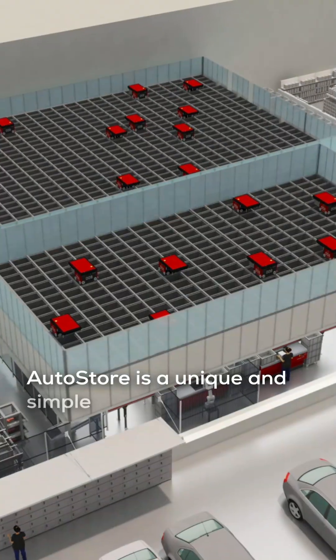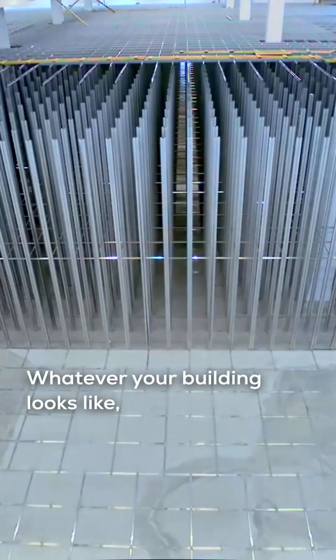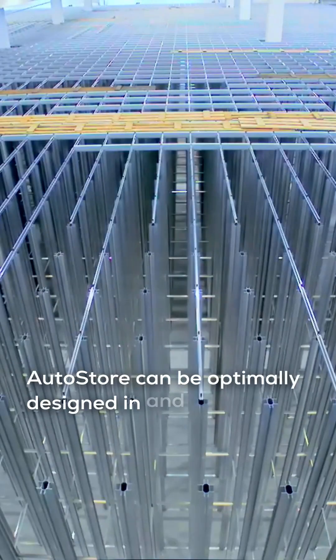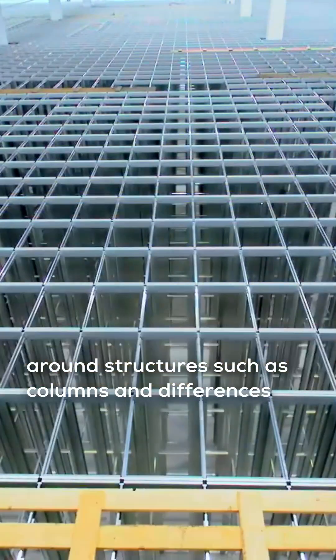AutoStore is a unique and simple solution that uses robots and bins to quickly process orders. Whatever your building looks like, AutoStore can be optimally designed in and around structures such as columns and differences in floor height.